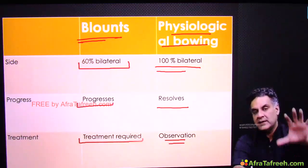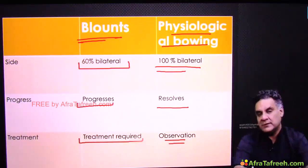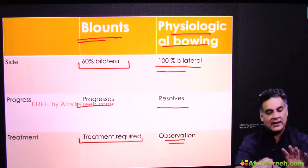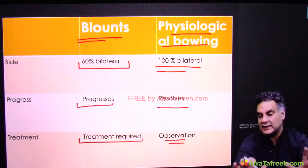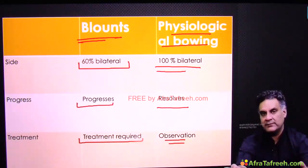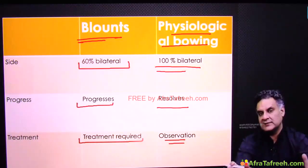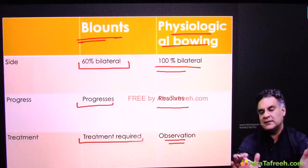Treatment for Blount's: any varus deformity requires a corrective osteotomy. Take out more bone on the lateral side and less on the medial side — a lateral-based wedge osteotomy.